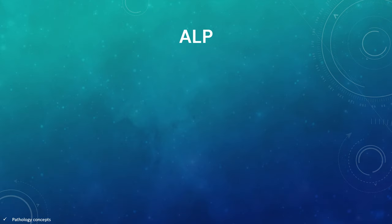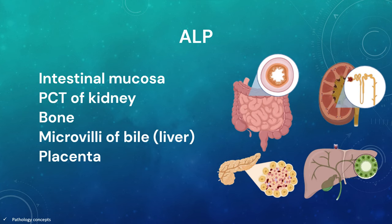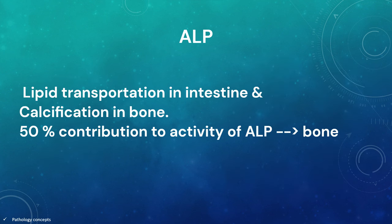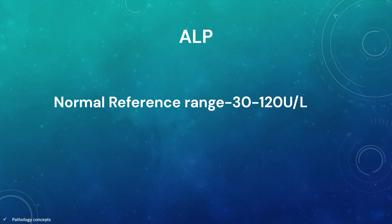Alkaline phosphatase is synthesized in intestinal mucosa, proximal convoluted tubule of the kidney, bone, microvilli of bile and placenta. It helps in lipid transport in the intestine and calcification in bone. 50% contribution to the activity of ALP is from the bone. Normal serum ALP level is 30 to 120 units per litre.